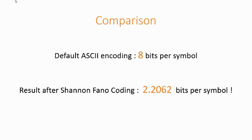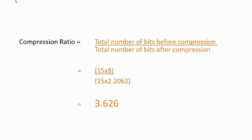Now let's have a quick comparison. Using default ASCII encoding, we require 8 bits per symbol. But using Shannon-Fano coding, we get only 2.2062 bits per symbol. The compression ratio is calculated as total number of bits before compression divided by total number of bits after compression: (15 × 8) / (15 × 2.2062), which gives a compression ratio of 3.626.